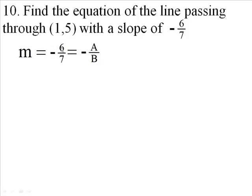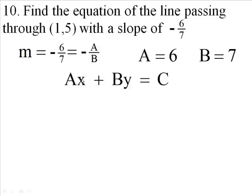So if you're going to do this, you're going to say A is what? 6, and B is what? The denominator, 7. Now we take our standard form of our equation, Ax plus By is C, and we know that A is 6, and B is 7.